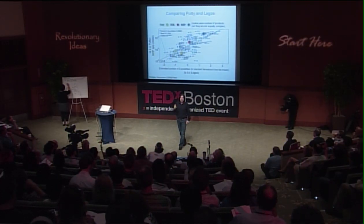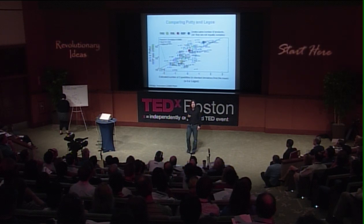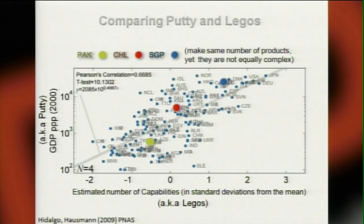Now let's compare Putty and Legos. On the y-axis is GDP per capita adjusted for purchasing power parity — the amount of money flowing through an economy divided by the population. On the x-axis is the relative number of capabilities measured in standard deviations from the mean, after considering diversification and ubiquity four times. There's a pretty good correlation: countries I identify as having more capabilities tend to be richer. Pakistan, Chile, and Singapore export exactly the same number of products, but when you account for ubiquity and diversification, Singapore groups with rich countries and Pakistan with poorer ones.